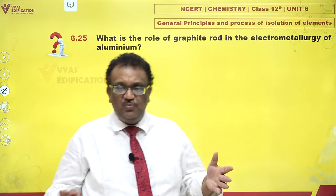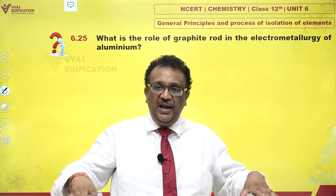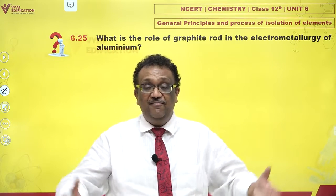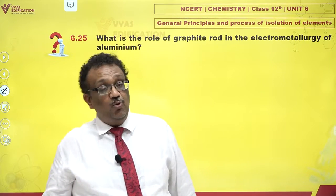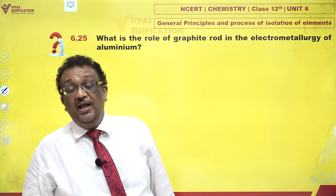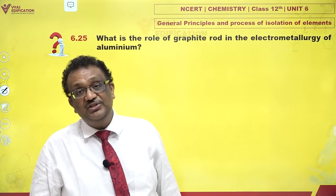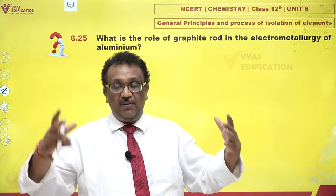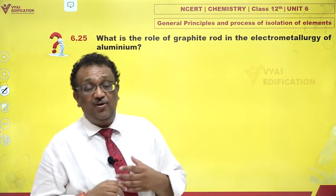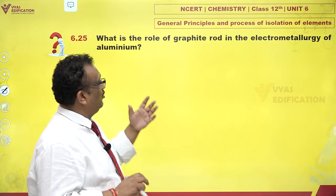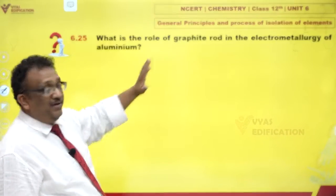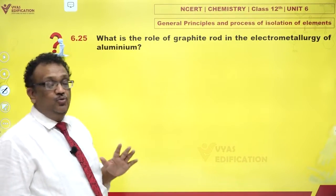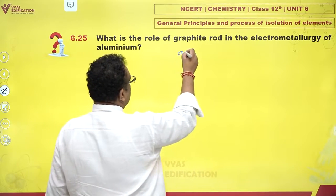Actually, not rods but graphite plates are lined within the tank which contains molten cryolite, and that functions as cathode. Since they are carbon plates and they are not rods, we are not writing them down. Graphite rods strictly are used as anodes.